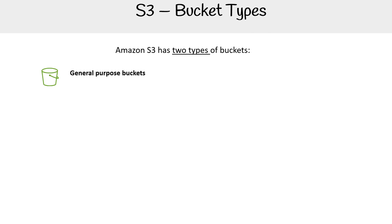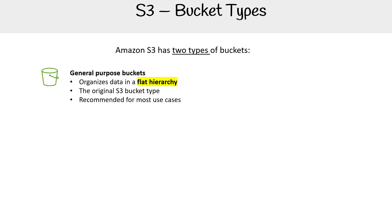For the general purpose bucket, the data is organized in a flat hierarchy. That means there are essentially no folders — everything literally sits in one namespace. This is the original S3 bucket type, so whenever you are spinning up a bucket, this is what it's going to be using unless specified otherwise. It's recommended for most use cases.